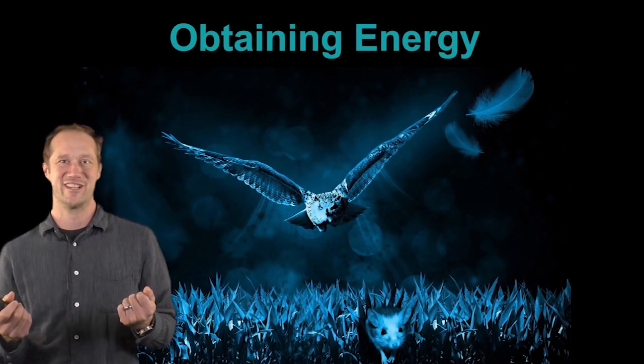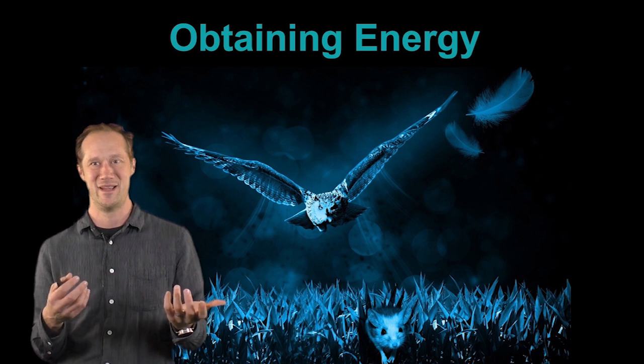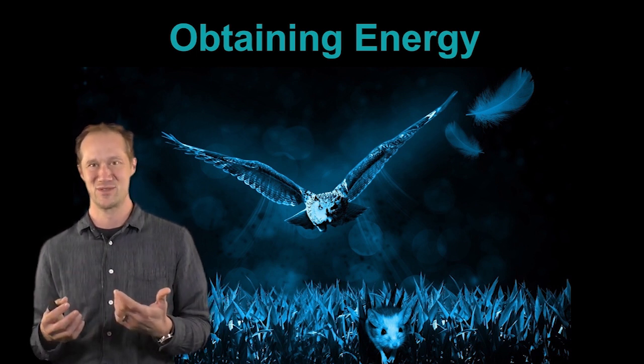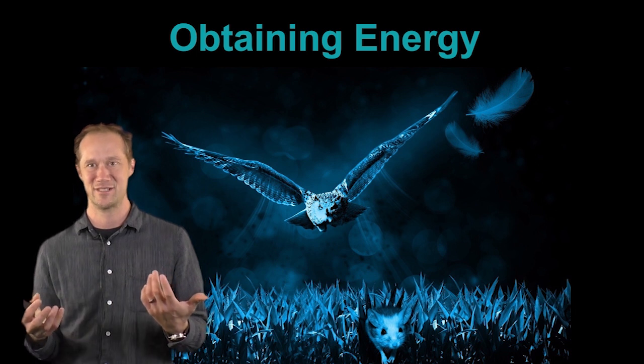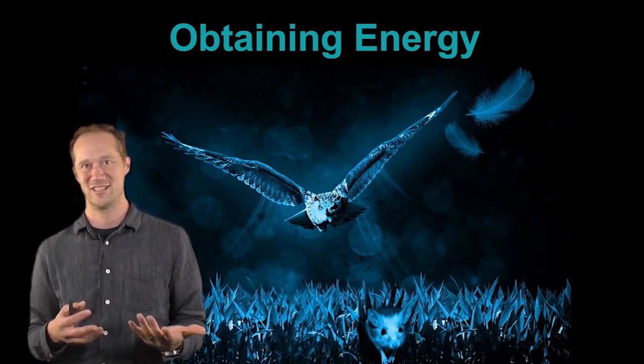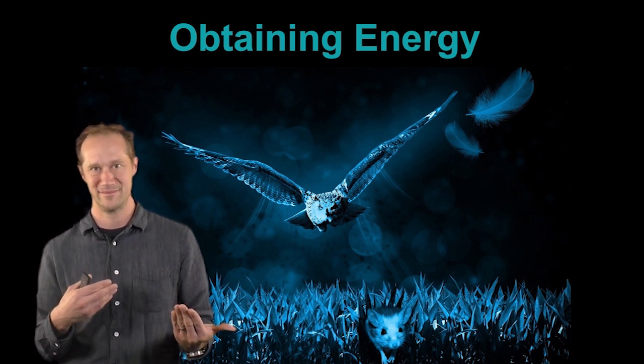So in terms of obtaining energy, this is a dramatic picture of an owl chasing down a mouse to eat for food. And that's one type of example of getting resources or food is through what we call active capture. But other ways include things like grazing like a cow in a pasture or sit and wait, which would be like snakes or spiders waiting for prey items to come to them.